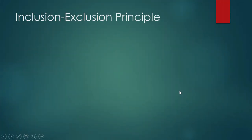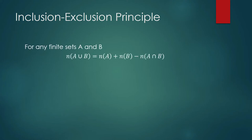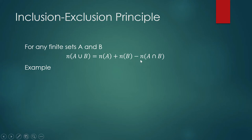Inclusion-exclusion principle: for any finite sets A and B, the cardinal number of A union B is the number of elements contained in A union B. The inclusion part has to do with addition, and the exclusion part has to do with subtracting. So the cardinal number of A union B equals the number of elements in A, plus the number of elements in B, minus the number of elements in their set intersection.